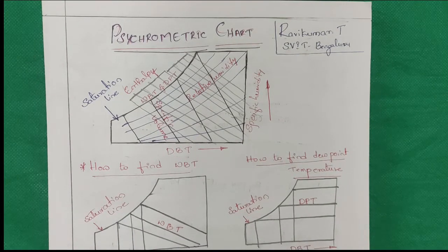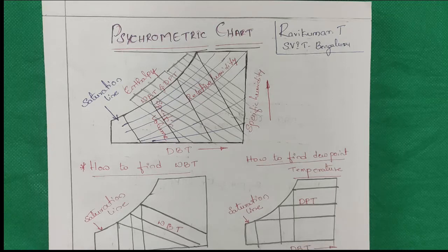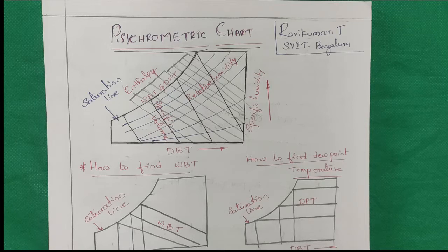In the air conditioning system, without using a chart — with the help of formulas — you can do the calculation of the performance of an air conditioning system. You can find out dry bulb temperature, wet bulb temperature, specific humidity, everything. But if it is a simple problem, you can solve it with the help of formulas only.